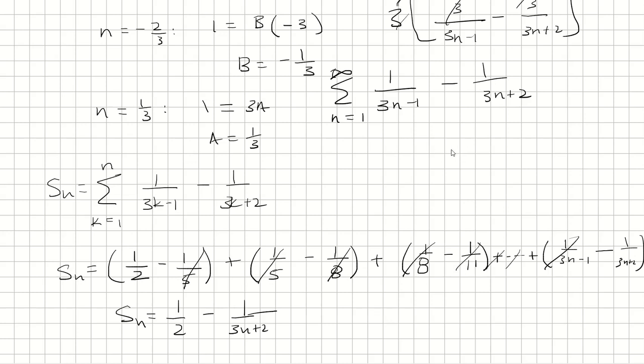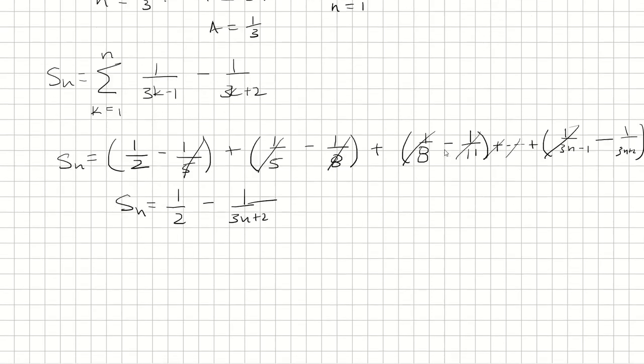So now, if the partial sums may be used to establish that the series converges, calculate the sum of the series. Basically, we want to find the limit as n approaches infinity of our S of n, which is the limit as n approaches infinity, 1 half minus 1 over 3n plus 2. This thing goes to 0, so we have 1 half as our final answer.